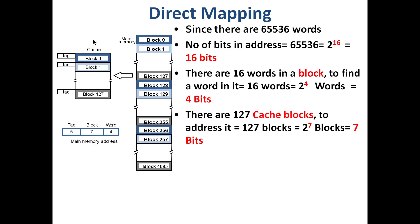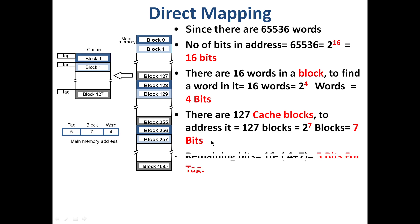The cache has 128 blocks, which is 2 raised to 7, so the cache block field is 7 bits. The word address (block size 16 = 2 raised to 4) is 4 bits. The remaining bits are 16 minus 7 minus 4 = 5 bits, which form the tag. So the address format is: 5-bit tag | 7-bit cache block address | 4-bit word address.